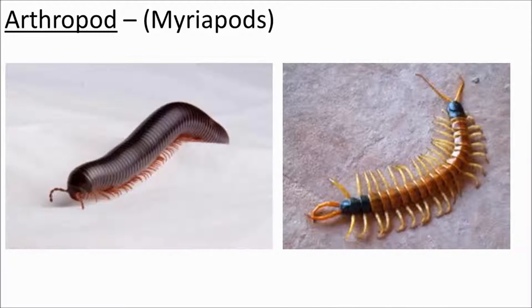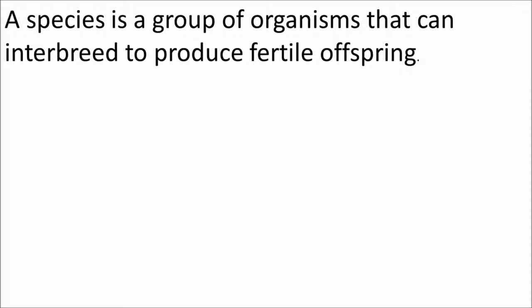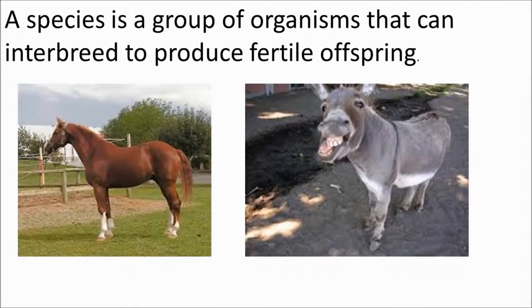Let's move on to a definition of a species. That might sound easy to define, but it's actually very difficult — a zoologist would disagree with a microbiologist who would disagree with a botanist. But the general definition is: a species is a group of organisms that can interbreed to produce fertile offspring. For example, a horse and a donkey can interbreed — the result is a mule — but the mule is not fertile. Two mules cannot have a baby mule. Because of this we say a horse and a donkey are not the same species. Similarly, the lion and tiger are not the same species, which is why the liger is so rare.